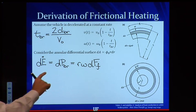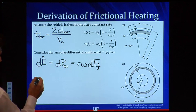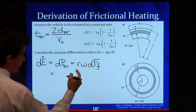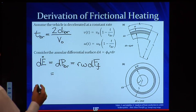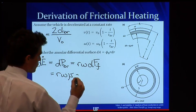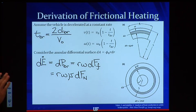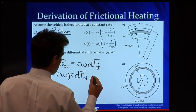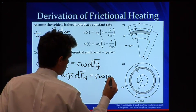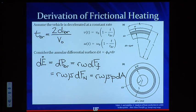The frictional force is equal to some coefficient of friction μ times the normal force acting on the pad. Since the frictional coefficient is constant, we can take that out as well, giving us r·ω·μ·dN. The normal force is the pressure on the pad times the area over which it's acting, so this equals r·ω·μ·P·dA. Now we have an expression for the differential heat generation.